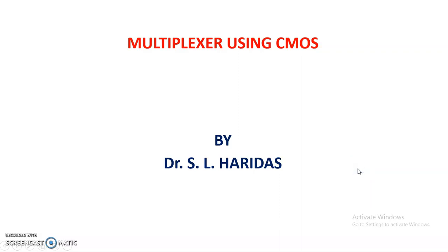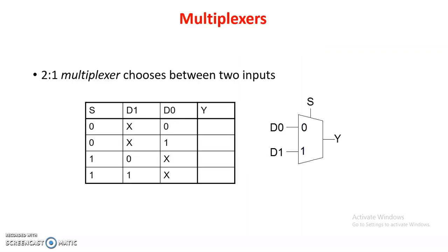Hi, I am Dr. SLF Das. Today we are discussing multiplexers using CMOS logic. First one is the 2-to-1 multiplexer. A 2-to-1 multiplexer has two inputs and one output. Out of the two inputs, the output will be any one of the inputs. So we can say that a 2-to-1 multiplexer chooses between two inputs.